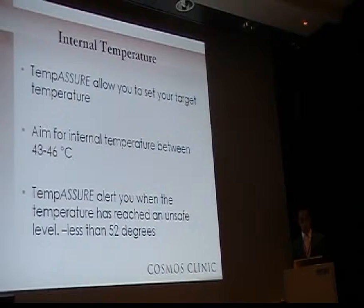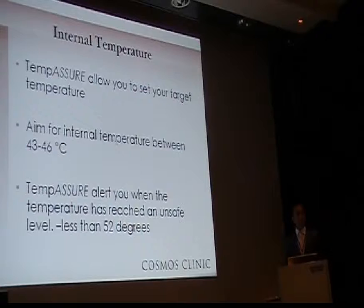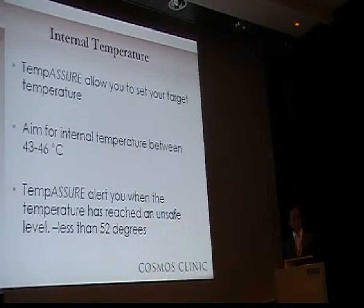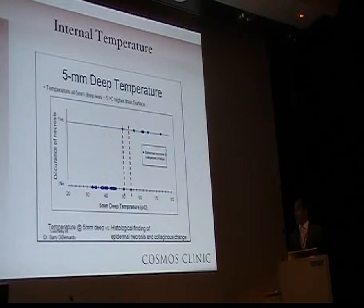The temperature allows you to set the appropriate target temperature. We aim for a temperature between 43 to 46 degrees. It will also allow you to set the unsafe temperature, and the machine will alert you to this temperature. We set it at a temperature of less than 52 degrees. This graph from Deepinado shows that temperatures above 52 degrees can cause tissue necrosis.